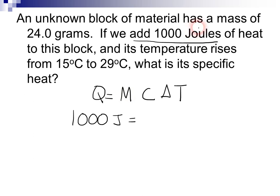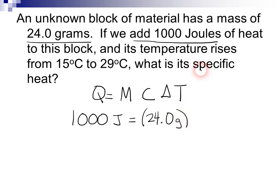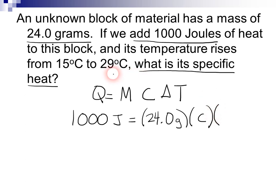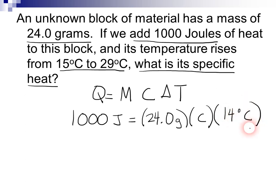M is the mass — the problem states it has a mass of 24.0 grams, so that is going to be plugged in for M. C is the specific heat capacity, and the question asks what is its specific heat, so that's what we're solving for — we're solving for C. Delta T is the change in temperature. It goes from 15 degrees Celsius to 29 degrees Celsius. When you subtract those numbers, you see that it's a rise of 14 degrees Celsius. So that's our delta T.